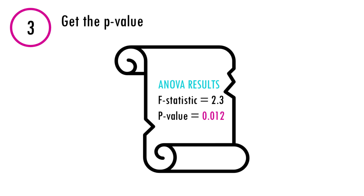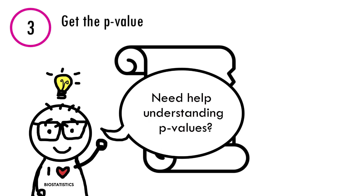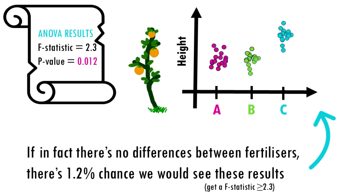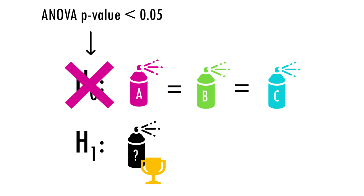With the ANOVA test, as with any statistical test, we will get a p-value. The p-value tells us the probability of observing an F statistic as large as or larger than the one we calculated, assuming the null hypothesis is true. In other words, if all group means are equal — no difference between fertilizers — there's a 1.2% chance we're seeing these differences. It's up to you to decide on the level of significance, but usually a small p-value, typically under 0.05, means there's strong evidence against the null hypothesis, suggesting at least one group mean differs significantly from the rest.